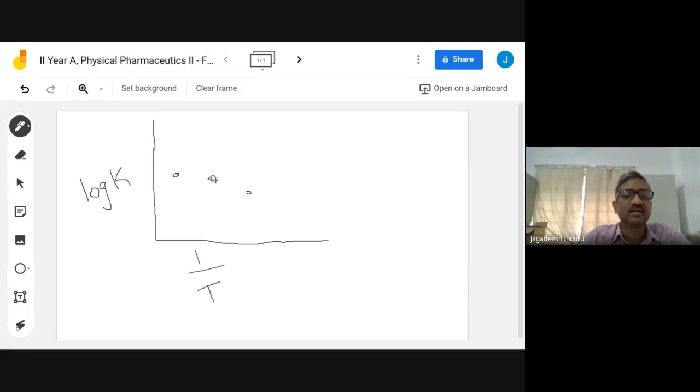When you are plotting 1/T, you are multiplying with 10 to the power of 3. Here also you are adding a thousand. Log thousand is equal to 3, that is the reason you are adding log plus 3.